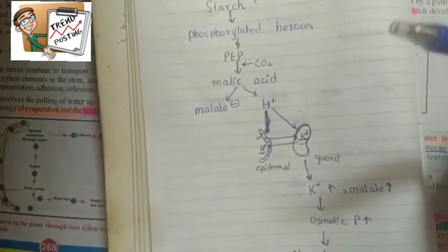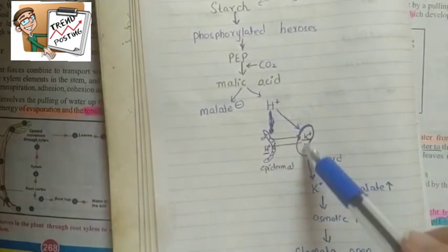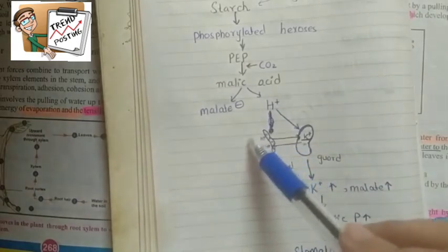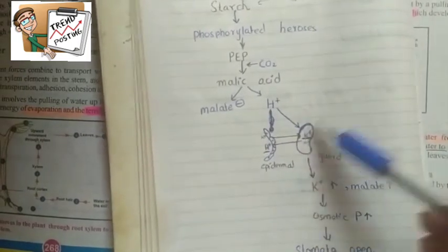Hydrogen ions are higher in guard cells and lower in epidermal cells. Because we know that from the area of high pressure to lower pressure, hydrogen will move to the epidermal cells.